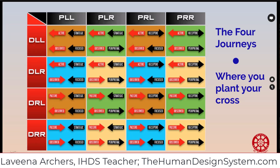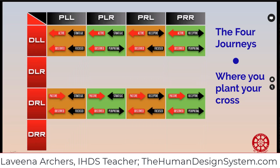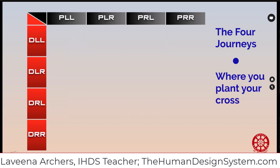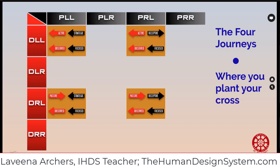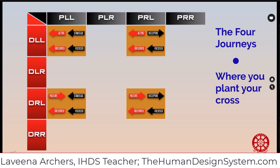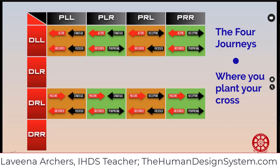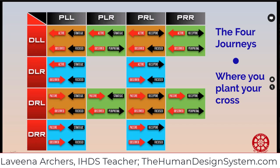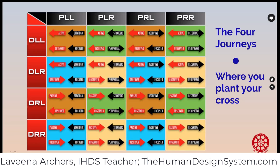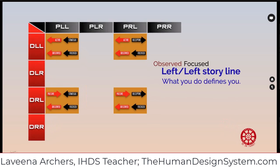So we have four archetypal movements, four different places where you can plant your cross. This is where you plant your cross in your storyline — it's based on your storyline, that cognitive potential. What we have in common with the others in our colored button boxes is very important. This is in Advanced Mechanics, lecture seven on the variables following our storyline.